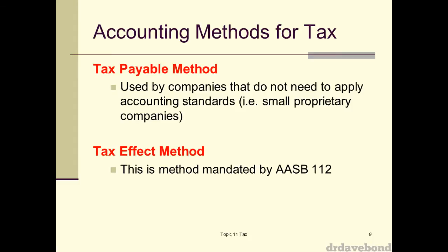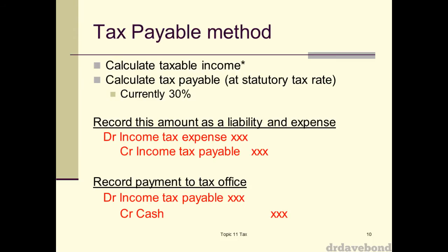All tax payable is — if I have a small business and I work out that I've got a thousand dollars in taxable income, and the tax rate's 30%, I owe the government $30. And I would simply recognise a tax expense of $30 and a tax payable of $30, which would be your current tax liability.